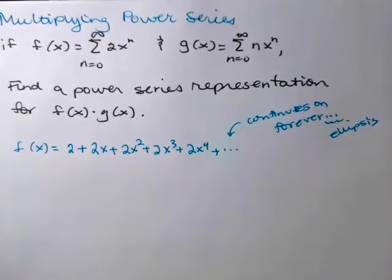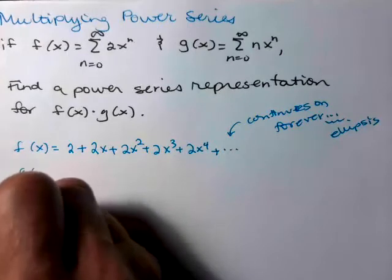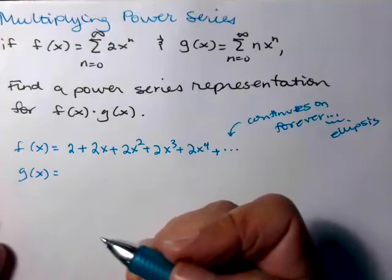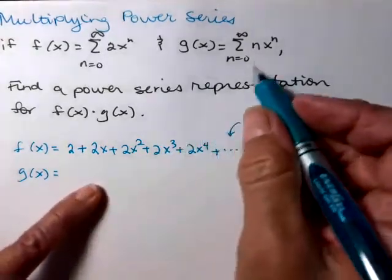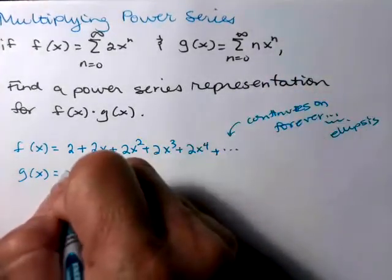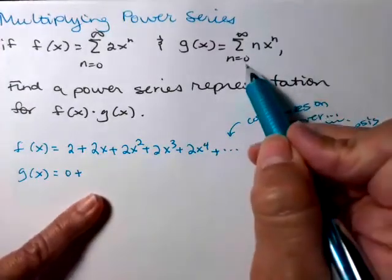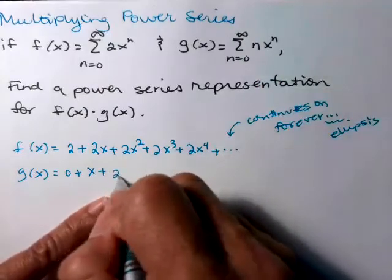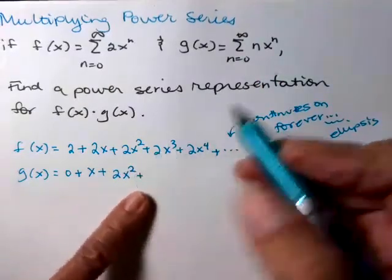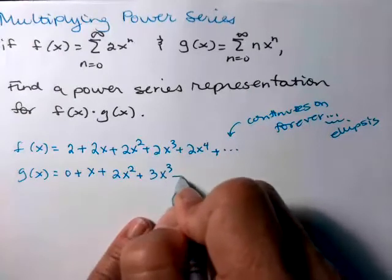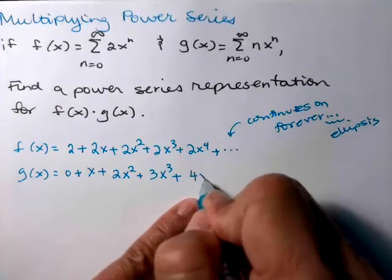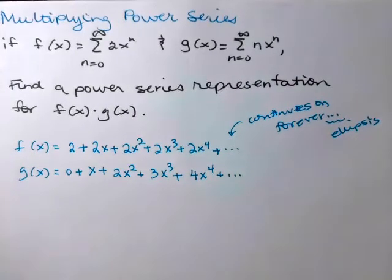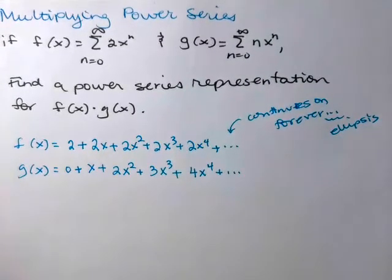Now let's write out a few terms for g. g(x), if n is 0, that one's a 0. If n is 1, I just get an x. If n is 2, 2x². If n is 3, 3x³. You see the pattern. 4x^4.